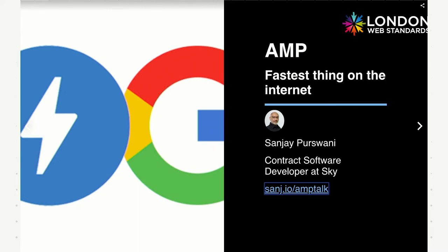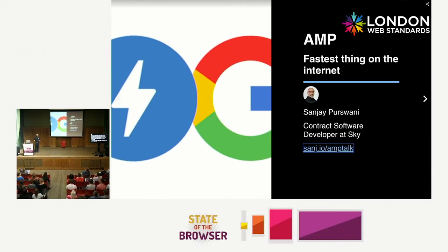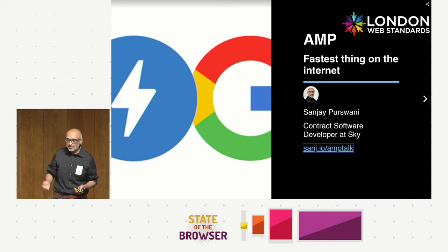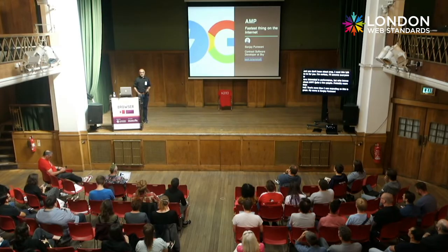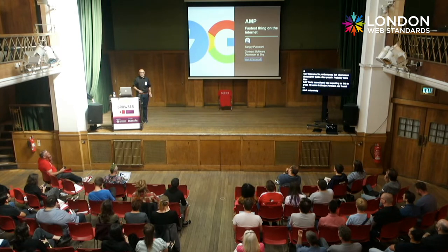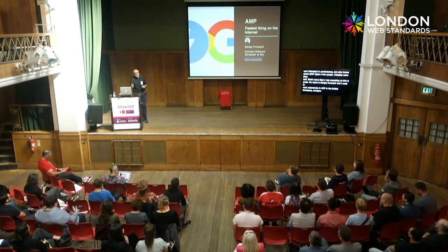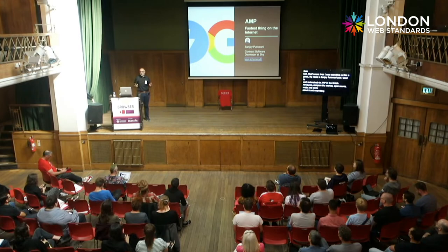My name is Sanjay Perswani. I used to work extensively in AMP — at Compare the Market, on AMP solutions, open source, writing and speaking about it. Then I transitioned into a lot of JavaScript work, and for all of this year I've been working as a contractor in React at Sky, and I haven't touched AMP in quite a while.